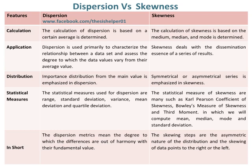In which we compute mean, median, mode, and standard deviation. In short, the dispersion metrics mean the degree to which the differences are out of harmony with their fundamental value, whereas the skewness steps describe the asymmetric nature of the distribution and the skewing of data points to the right or the left.